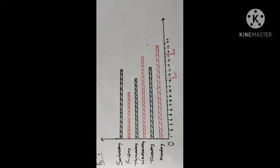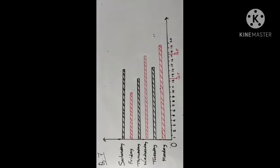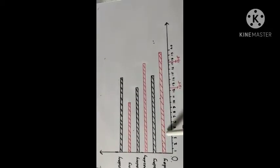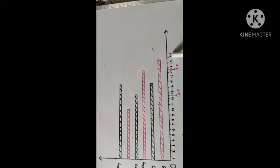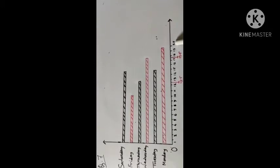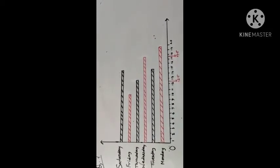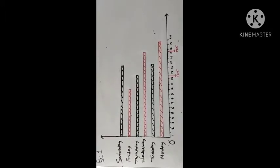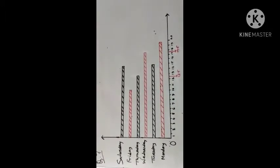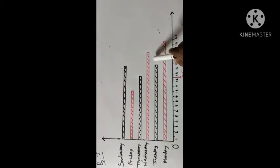The length of the rectangle for Monday will be 20 units, so we draw a rectangle of length 20 units. For Tuesday, the length of the rectangle is 15 units, so we draw a rectangle of length 15 units.